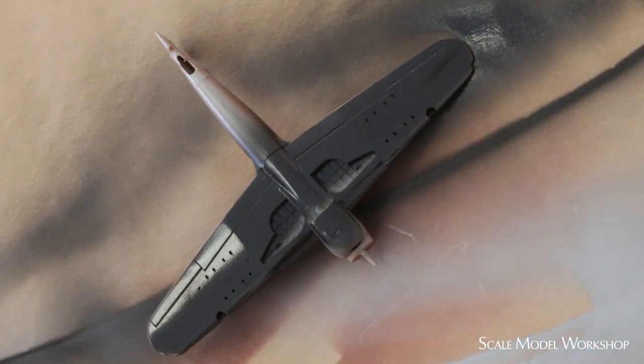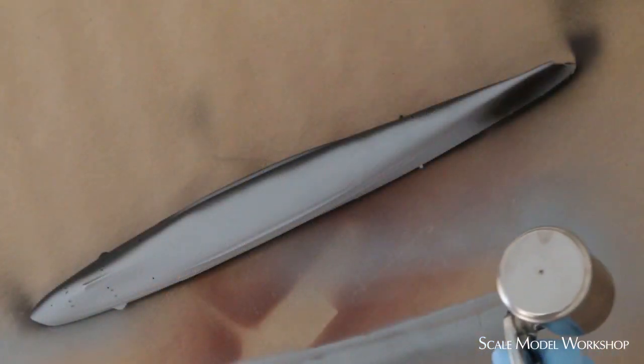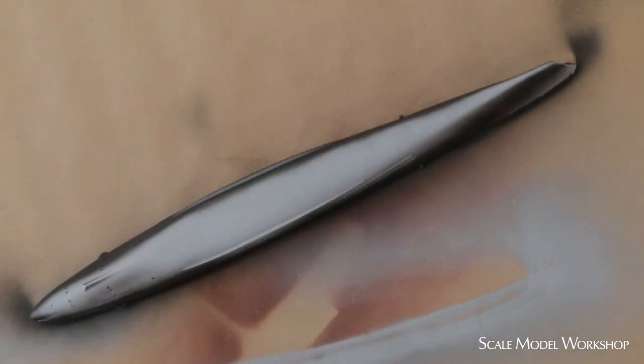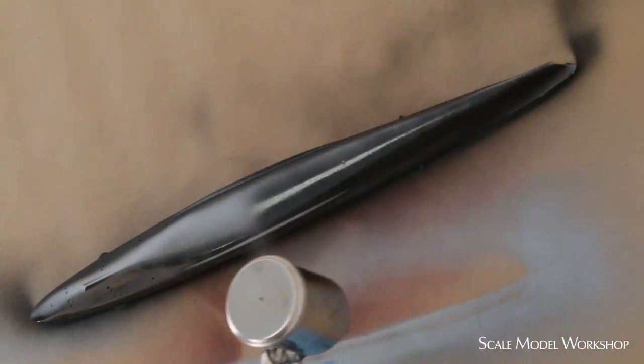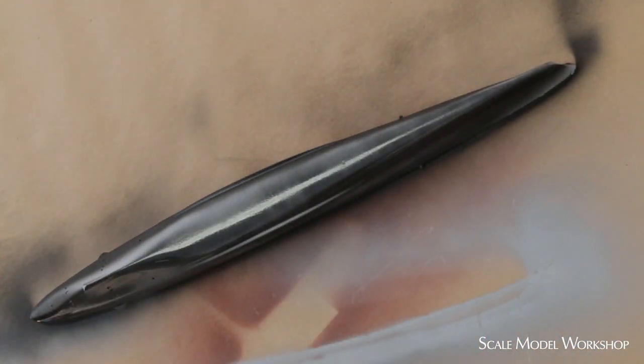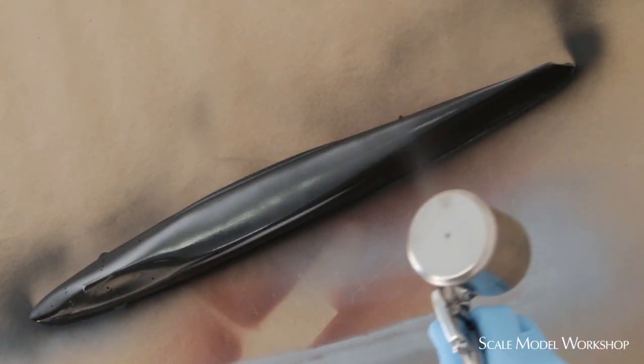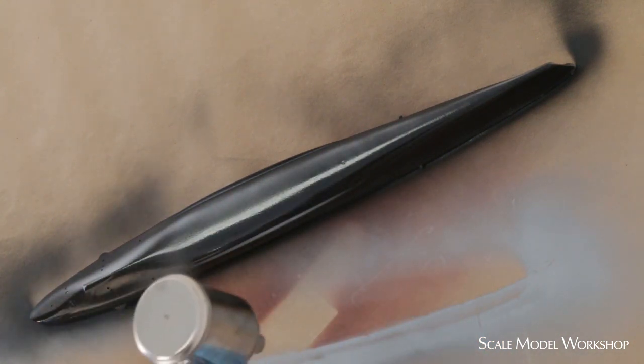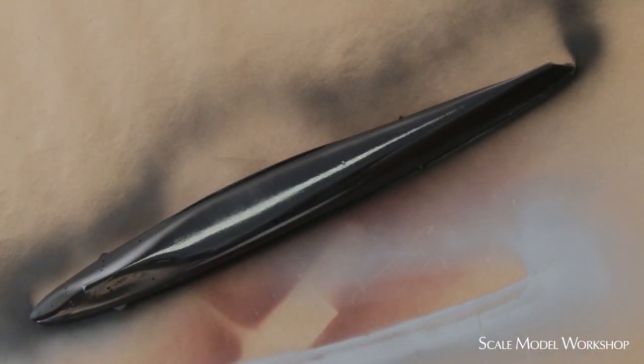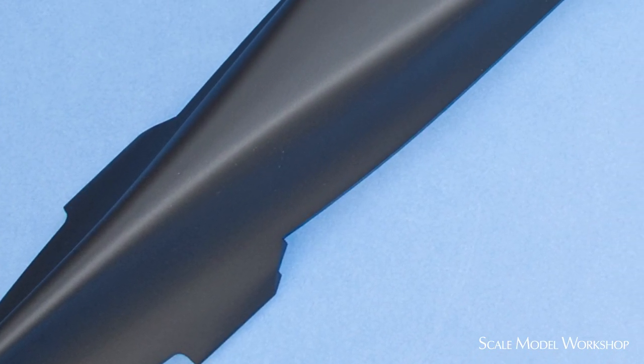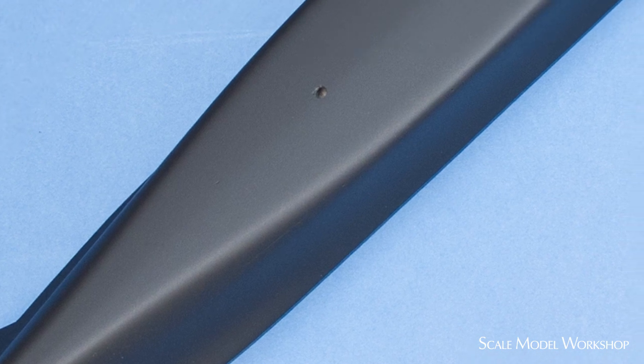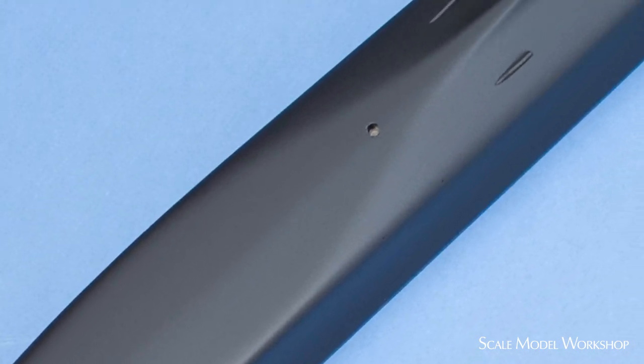Notice how wet the surface remains until the application is complete and then the material flashes off. This way we're spraying paint, not dust. So, after final application, you can actually see a sheen to the primer, leaving you with very little sanding.